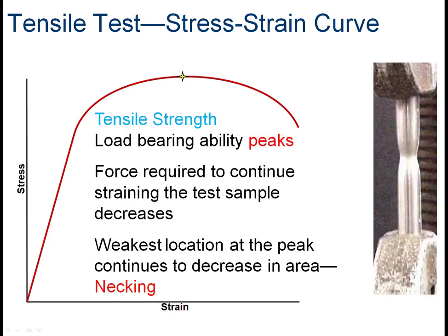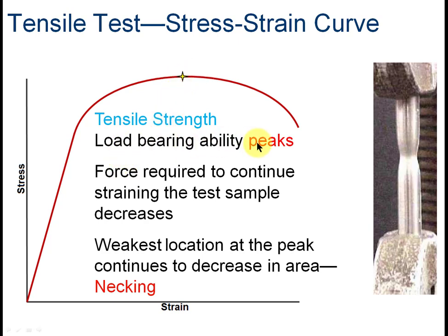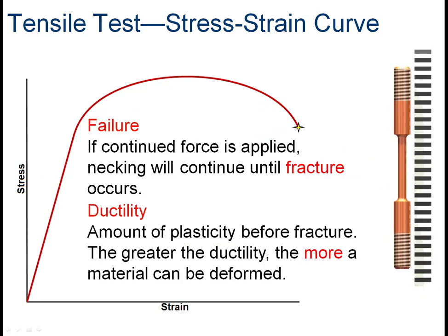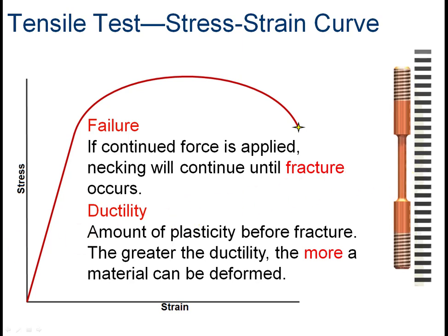What this looks like physically is necking — a visible narrowing of the body. That narrowing corresponds to the peak strength on the graph. The load-bearing ability peaks, and then the force required to continue straining the sample starts to fall off — I go down the curve to the right. It keeps stretching out, the sample necks out and gets narrower, and ultimately it snaps. You can actually see the smaller portion of material at the neck where it fails. We call that fracture.